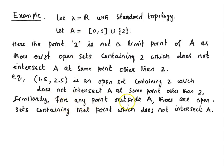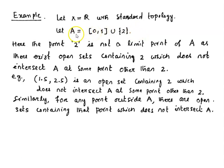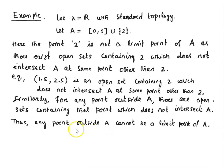Similarly, for any point outside A, there are open sets containing that point which do not intersect A. For example, if we take 3, which is outside A, we can easily find an open interval containing 3 which does not intersect A. So any point outside A cannot be a limit point of A — for any such point, we can find an open interval containing it that does not intersect A.